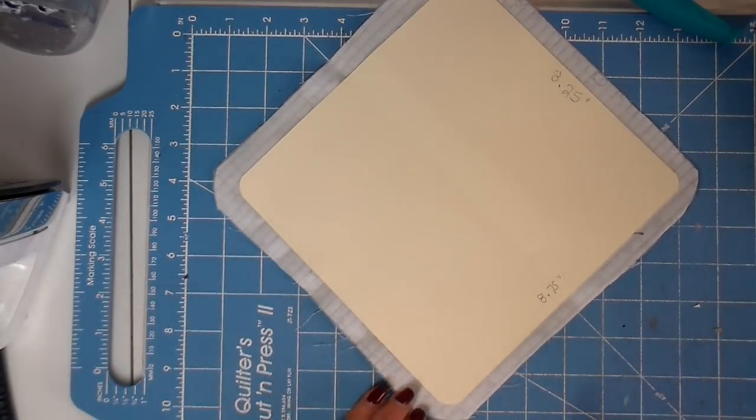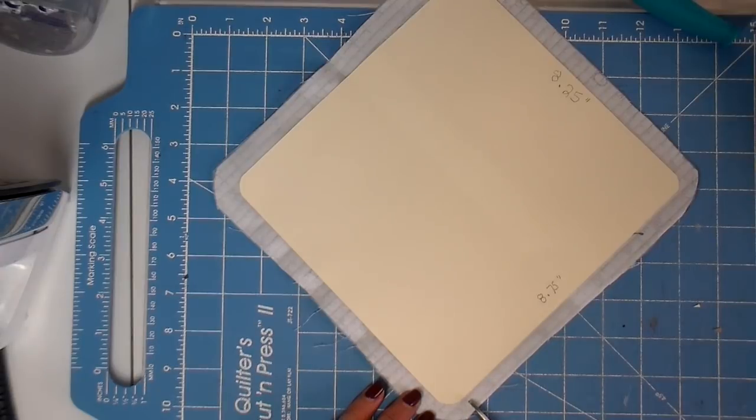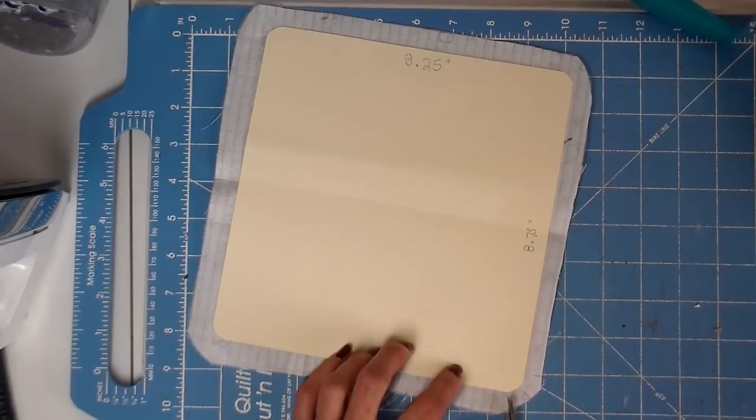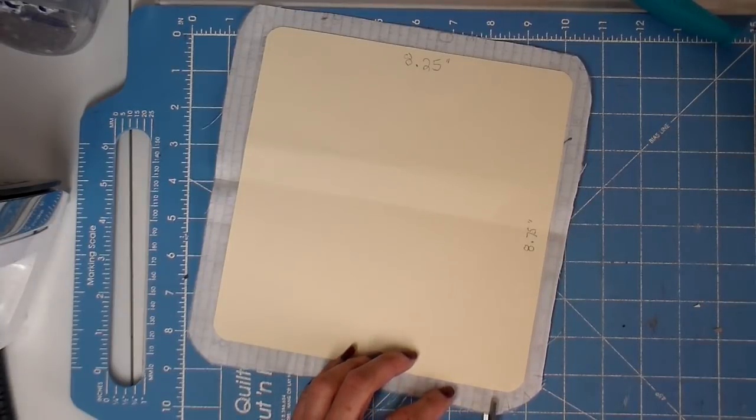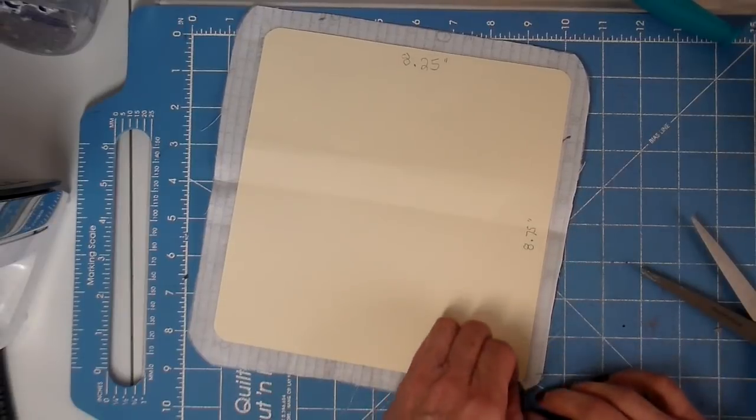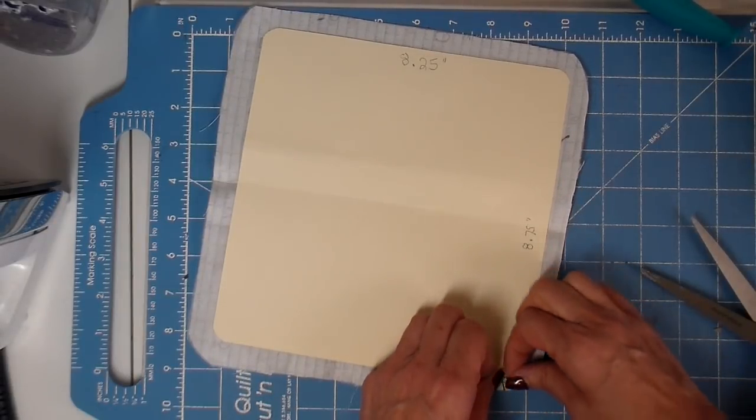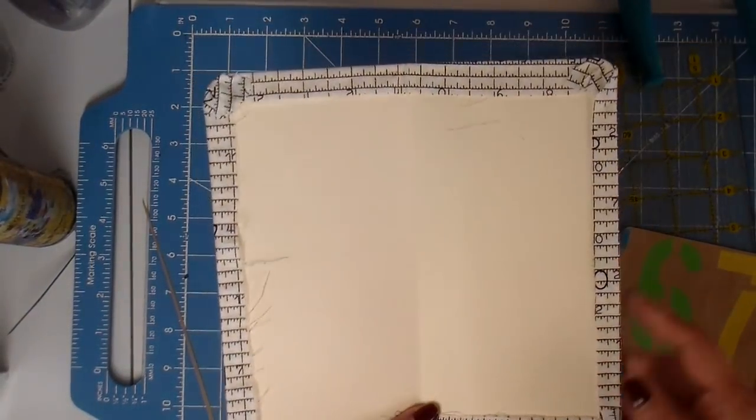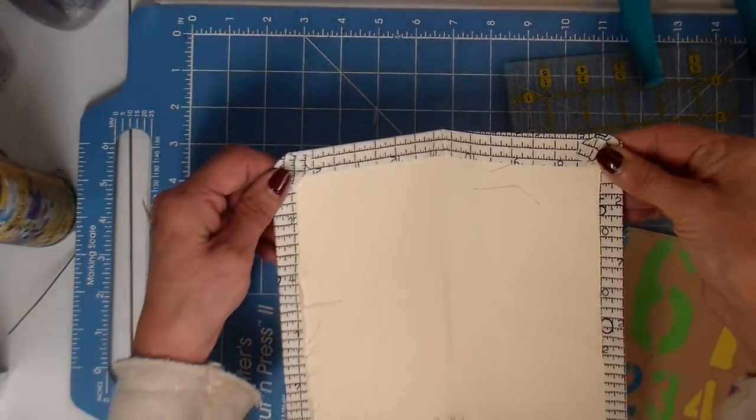For the corners, I like to just do a couple clips. Not all the way to the cardstock, but close to the cardstock. And then I will glue this up and around the corners. I got everything glued into place and the corners are pressed down.